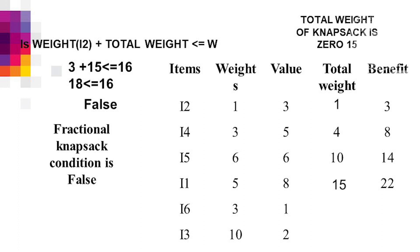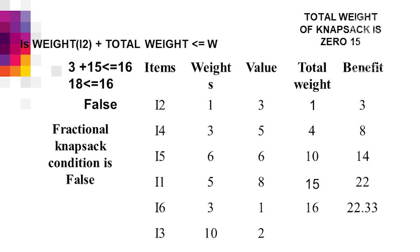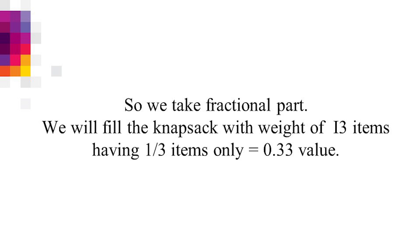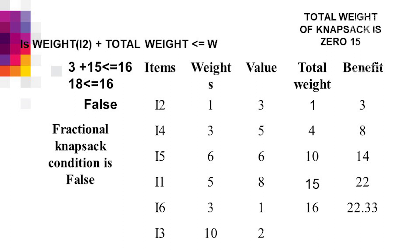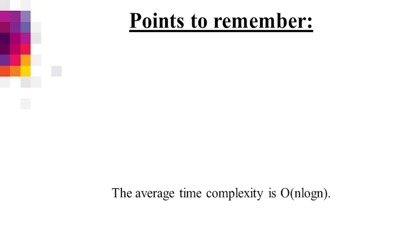Next item is i6 — total weight would become 18, which is greater than the maximum weight, so we ignore this item. However, we can take a fractional part of it to maximize profit. We fill the fractional part: the remaining capacity is 1 out of 3, giving a value of 0.33. So the maximum profit is 22.33 in total. The time complexity is O(n log n).